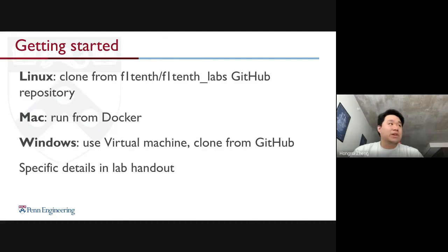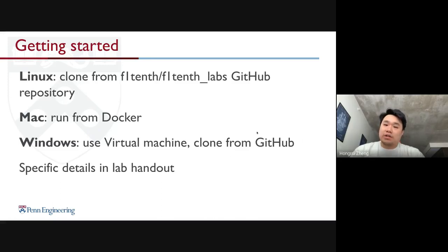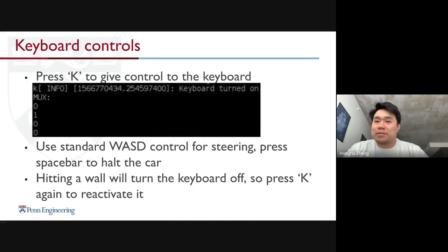To get started, if you're on a Linux system you can just clone from the F110 org and the F110 labs repo on GitHub and follow the instructions there. If you're on Mac you can run from a Docker container, and if you're on Windows you'll need to install a virtual machine or clone from GitHub — we'll hand out specific details. If you have keyboard control on the simulator, you need to focus on the terminal window and then press K to give control to the keyboard. You can then use the standard WASD controls for steering and press the spacebar to stop the car.